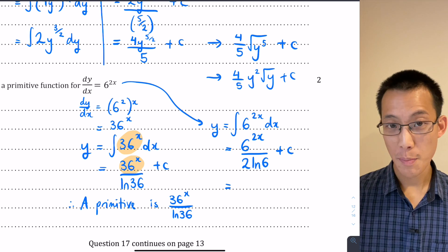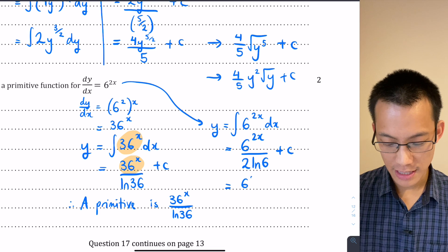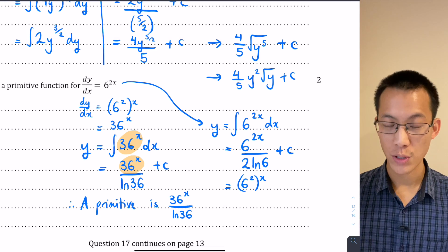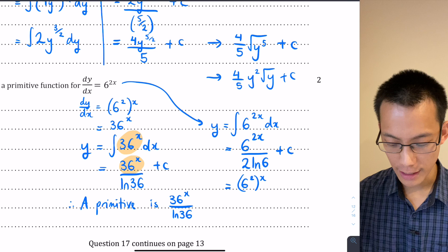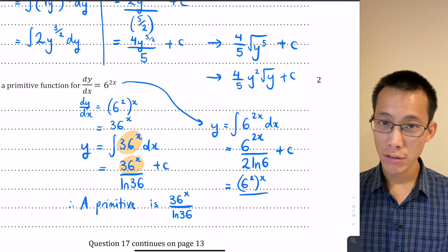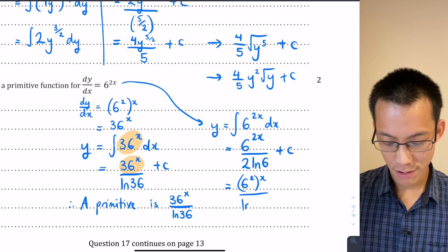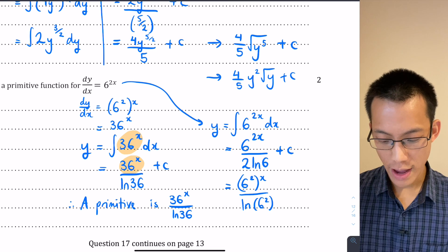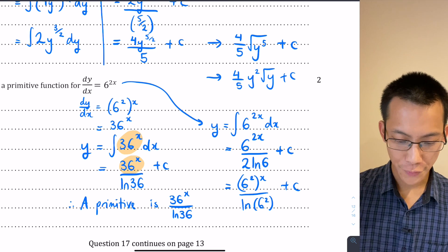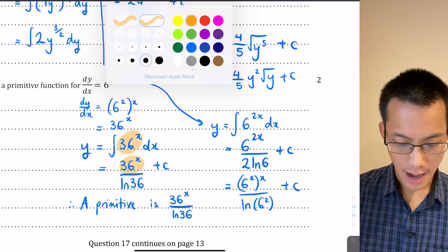Now let me show you how this is the same as what we got before. 6 to the power of 2x, well that's the same as 6² to the power of x that we saw in our very first line of working. And then lastly, 2 log 6 is actually equivalent to using our log laws, log of 6², and then we have our constant.